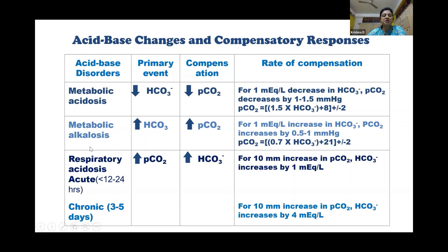In metabolic alkalosis, the primary event is increased bicarbonate and compensation is increased CO2. The rate of compensation: for every 1 mEq/L increase in bicarbonate, CO2 increases by 0.5 to 1 mmHg. Or the equation is: 0.7 × bicarbonate level + 21 ± 2.